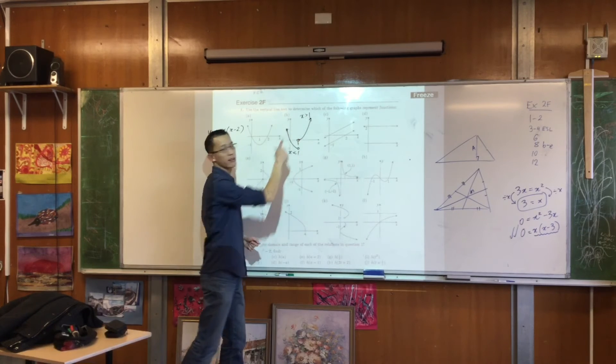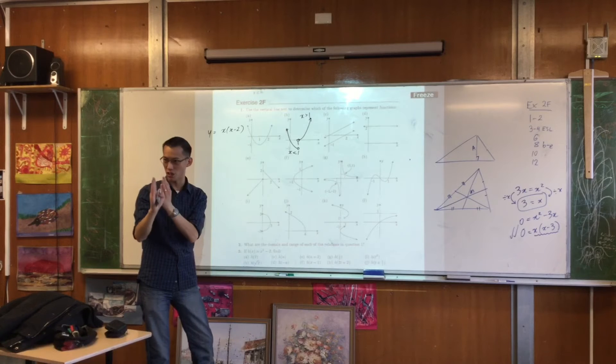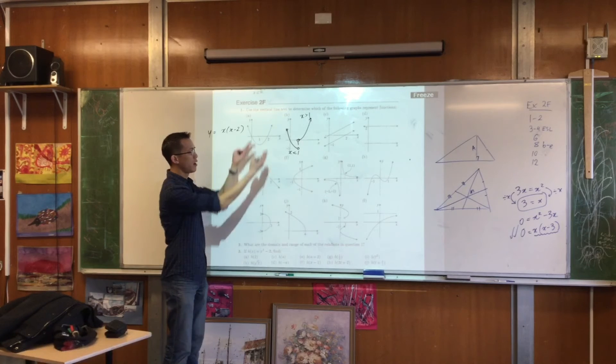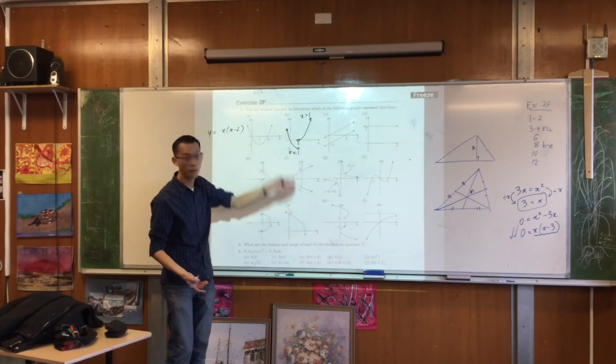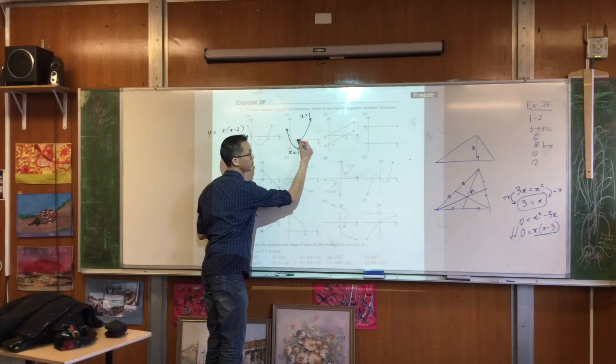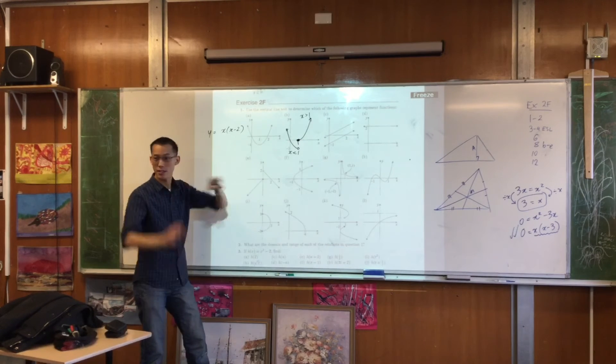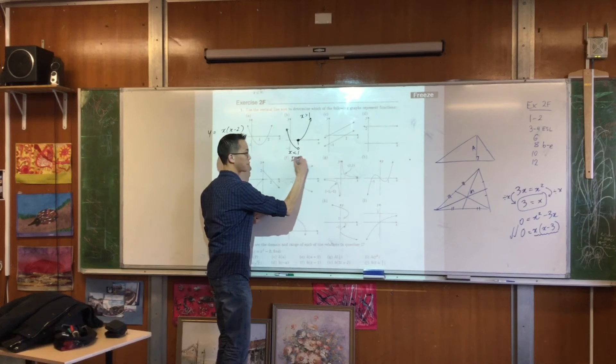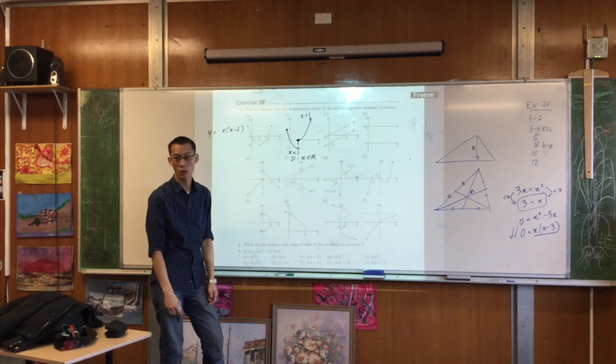In that case, what we would have is this discontinuity, this break. When x equals 1, what does this relation equal? Answer: nothing. There's no defined point for it. But the graph they've actually given us is filled, so therefore the domain for this, the total domain, is all real values of x. They're all defined, they all work.